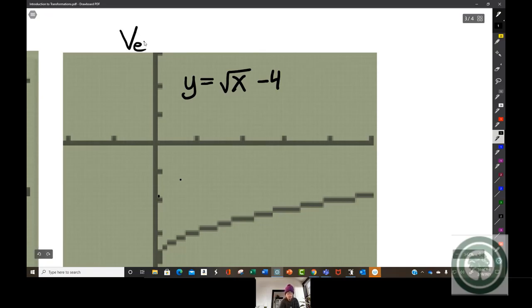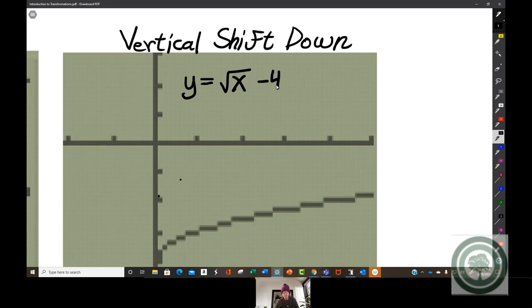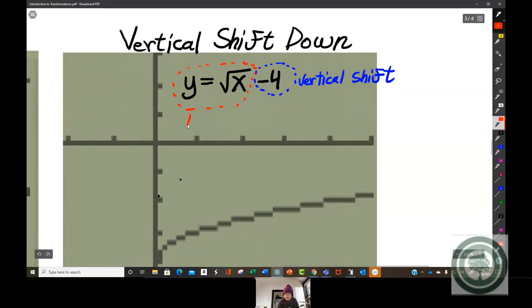Vertical shift down. How do I know? Well, let me write the word down. This minus 4 is on the outside of the square root sign. This is the basic function. And this, on the outside of the basic function, behind it, to the far right, is the vertical shift. So this is the vertical shift, and this is the basic function.